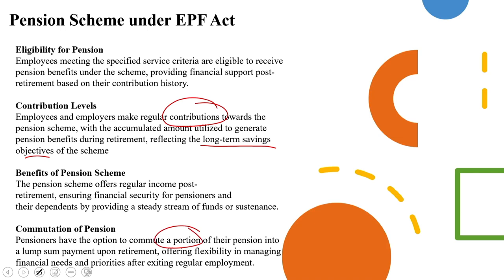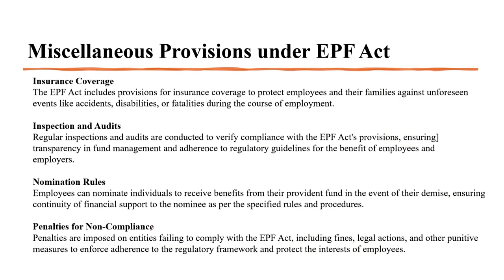The commutation of pension gives pensioners flexibility in managing financial needs and priorities after exiting regular employment. In the context of Indian society's growth pattern, the time of retirement is often when children are going for higher studies or when there is a requirement for a house requiring a larger amount of money. This commutation of pension will certainly help to achieve that target.